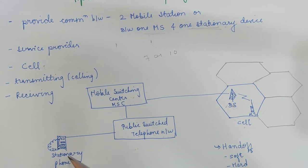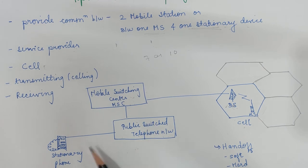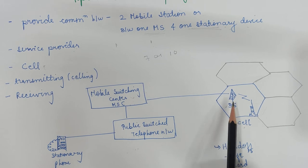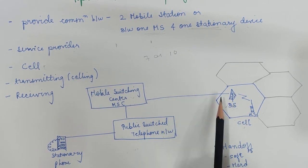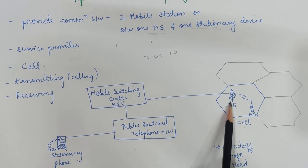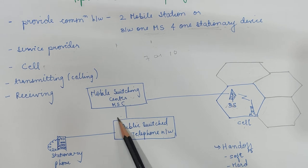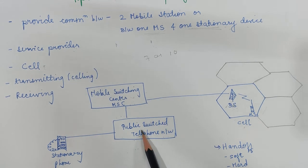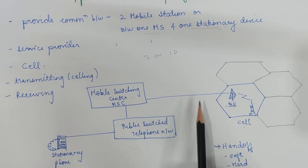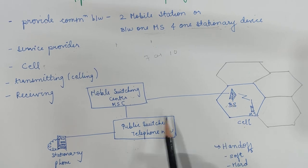That base station sends the data to the mobile switching center, and the mobile switching center sends the data to the telephone central office. If the particular party is available, then the communication takes place. Stationary phones are directly connected via the public switched telephone network, so no base station arrangement is needed for them.